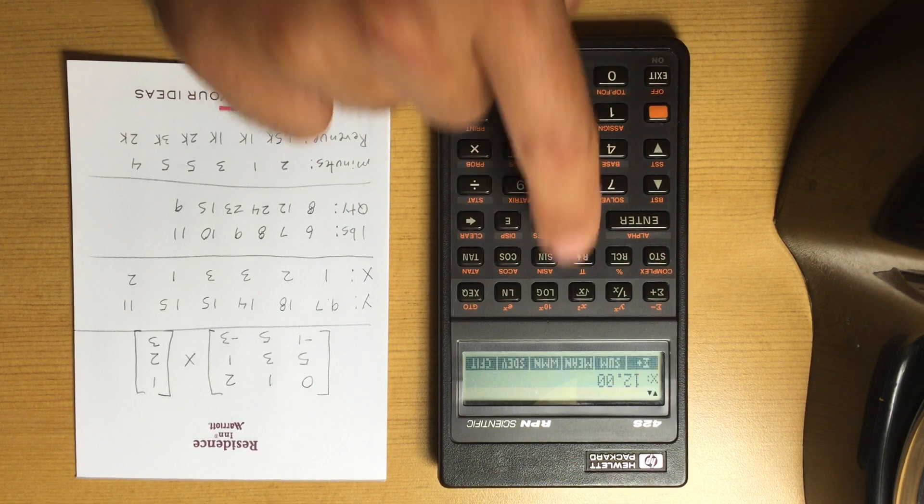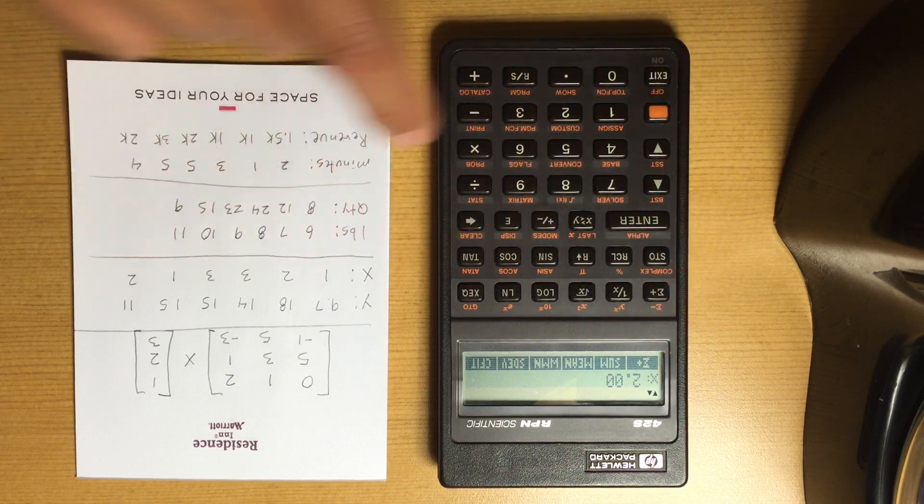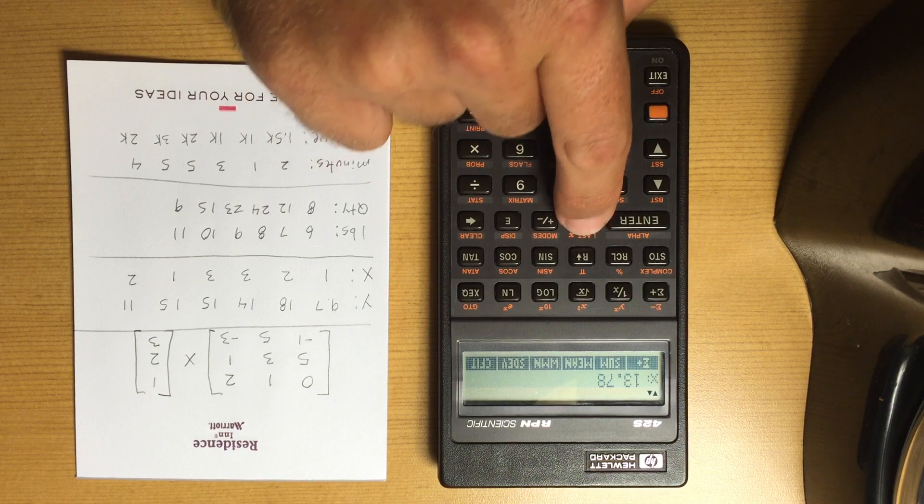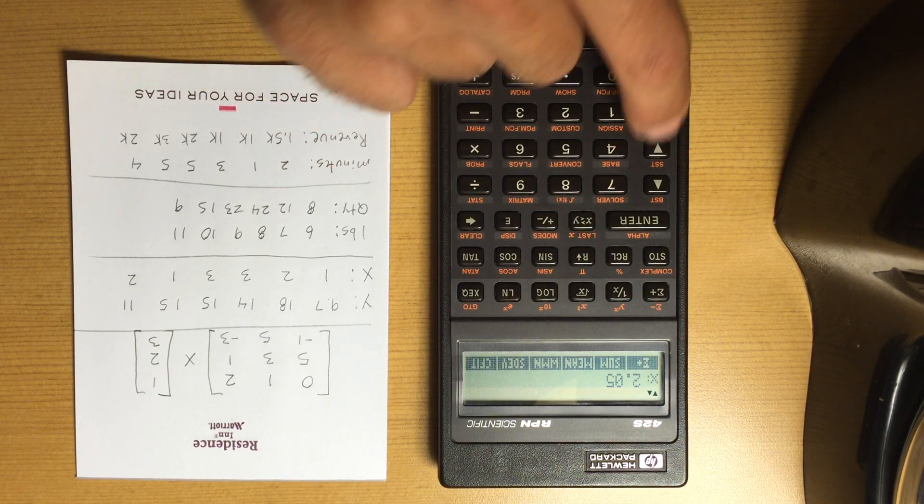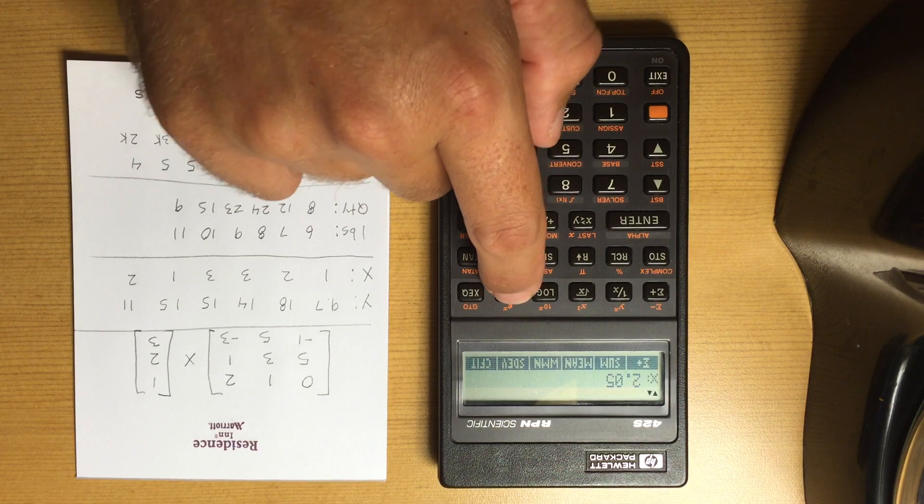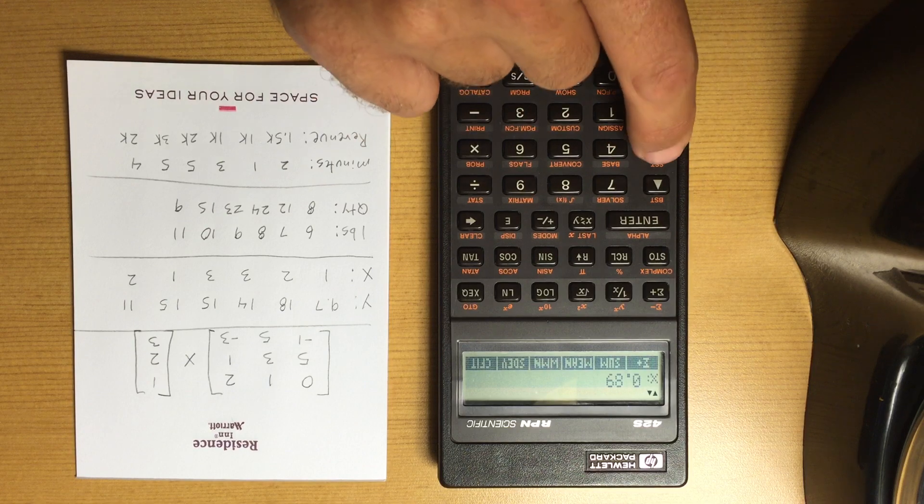The mean of the X's is 2 and of the Y's is 13.78. The weighted mean doesn't mean much here. Standard deviation, and I think that's it here.